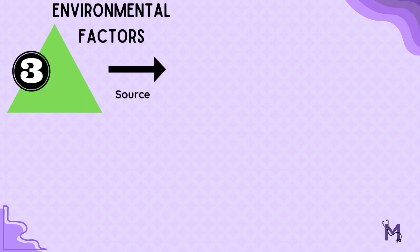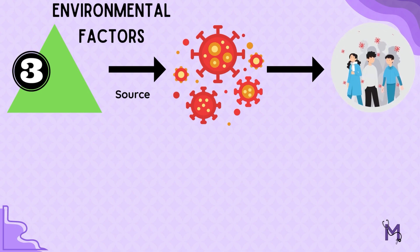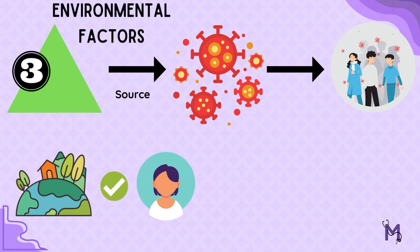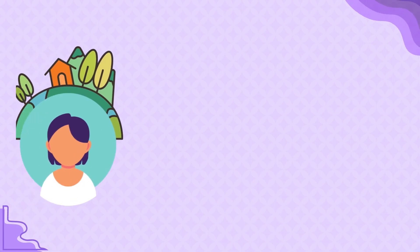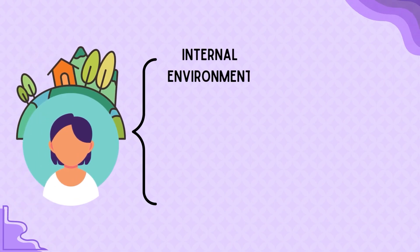Lastly, the most important constituent is the environment, which sits at the tip of the triangle. Environment is the source for the agents which then also helps with the transmission of these agents to the host. There may be instances when the environment is favorable to man and unfavorable to the agent, or vice versa. The environment of a man could be internal as well as external.